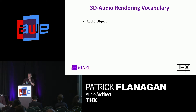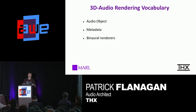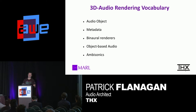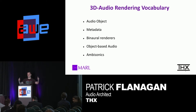3D audio rendering vocabulary, for those of you who aren't aware: an audio object is a mono waveform that has metadata associated with it describing its time, distance, and movement through space. Binaural renderers transform stimuli in a 3D space and add HRTF cues to give you a sense that the sound is coming from outside of your head. Object-based audio is also a mono cue and has the ability to move in time and space. Ambisonics is a spherical-based representation of sound — if you take multiple points across a room, that's essentially the number of samples or microphones inside that space to capture the audio information of the entire space.